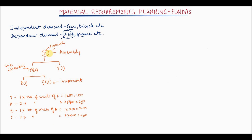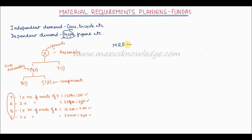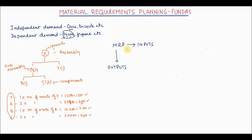So in order to assemble or manufacture 100 units of X, you need 100 units of Y, 200 units of A, 200 units of B and 400 units of C. These Y, A, B and C are known as dependent demand items. MRP, or material requirements planning, is used for planning the future requirements of these dependent demand items. MRP basically requires some inputs and then it generates the outputs.